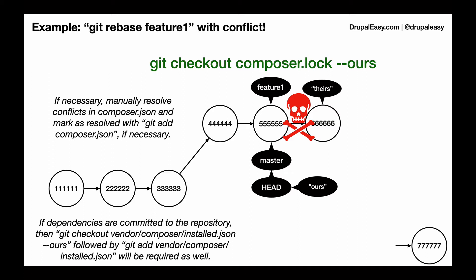If you're committing dependencies to the repo, normally your vendor/composer/installed.json file is going to be in conflict as well, but you can generally get that out of conflict just by doing a checkout on that file. And then finally, composer.lock is always going to be in conflict in this situation, so we want to do a git checkout of that. But let's talk about ours versus theirs.